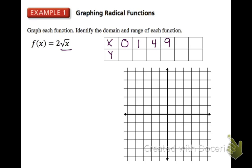If we plug 0 into our function, we get 2 square root 0. Square root of 0 is 0, times 2 is 0. Plugging in 1, we get 2 square root 1. Square root of 1 is 1, times 2 we get 2. Plug in 4, we're going to get out 4. Plug in 9, we'll get out 6.